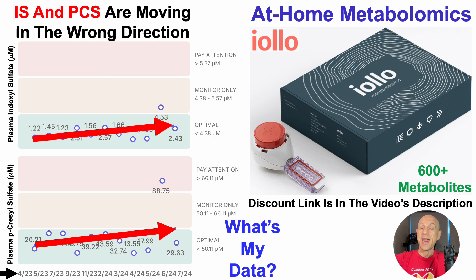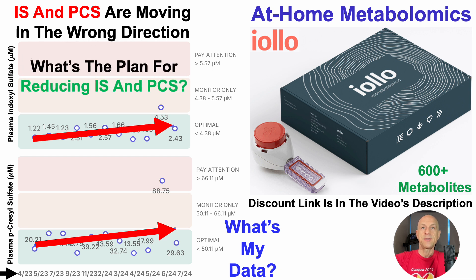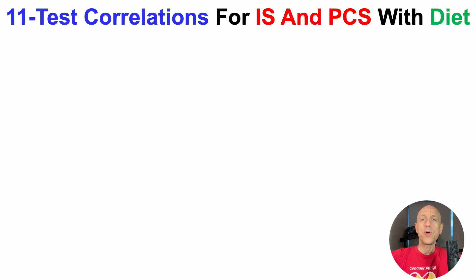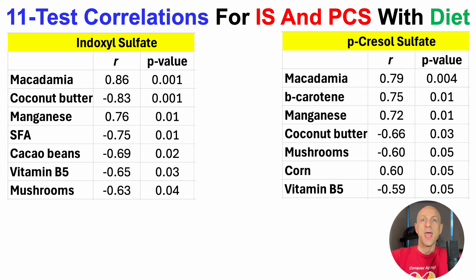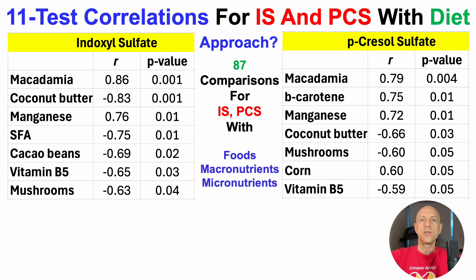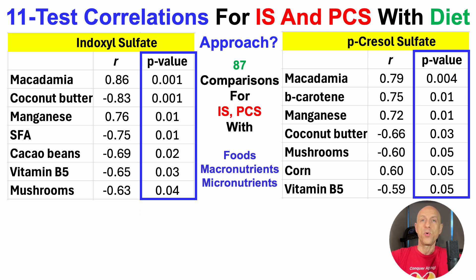So what's the plan for reducing levels of these metabolites? Let's look at the correlations. I examined 11-test correlations for indoxyl sulfate and p-cresyl sulfate with 87 foods, macronutrients, and micronutrients. Significant correlations have p-values less than 0.05 in both tables — this is a partial list; the full list is on the correlations tier on Patreon. The correlation coefficient is the lowercase r, and I'm looking for foods or nutrients significantly correlated with both metabolites.